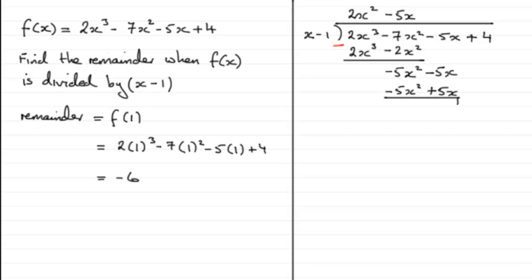And again, if we were to subtract to work out what that remainder was, then we have -5x² minus -5x² gives us 0. And -5x here, minus +5x is -10x. Finally, we bring down the next term here, +4.